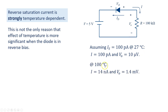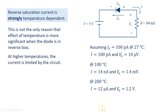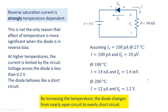If we increase the temperature to 100 degrees Celsius, the current increases to 14 nanoamps and the voltage across the resistor increases to 1.4 millivolts — still small, but it has increased 140 times and is measurable. If the temperature is increased to 200 degrees Celsius, the current increases to 12 microamps and the output voltage increases to 1.2 volts, which is comparable to the applied voltage. At higher temperatures the current is only limited by the circuit; the voltage across the diode is less than 0.2 volts and the diode behaves like a short circuit. By increasing the temperature, the diode changes from a nearly open circuit to a nearly short circuit.